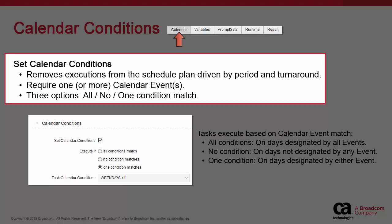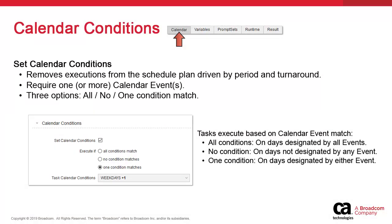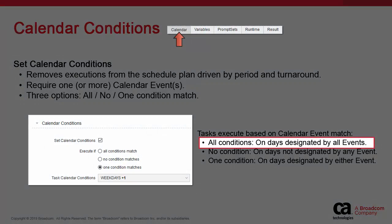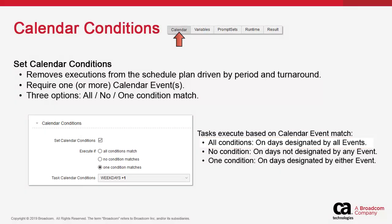The first option is execute if all conditions match. Say you have two calendar events — weekdays and first of the month. Both conditions need to be met in an intersection, which means the task will only execute on the first of the month and only if it is a weekday. Failing either condition, the task withholds. This is a boolean AND.